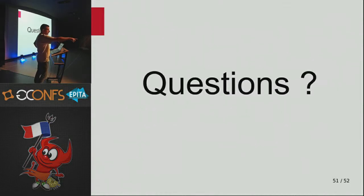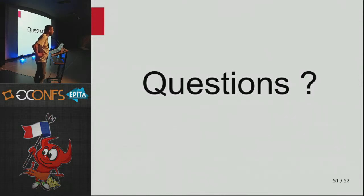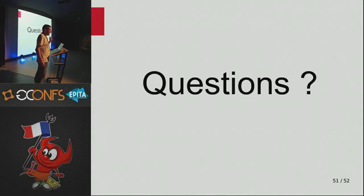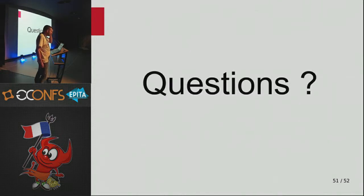Another question about measuring out-of-order packets: the speaker is currently using netmap pktgen which is a simple denial-of-service style tool that can't measure packet ordering. To measure that you'd need smarter tools - expensive hardware like IXIA, or a software option like Cisco's T-Rex which is DPDK-based. He plans to evaluate T-Rex for more advanced performance testing.